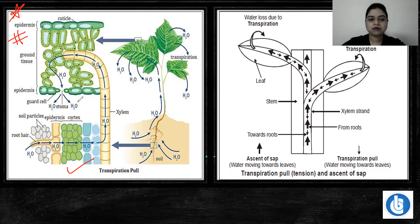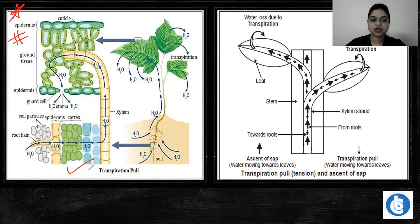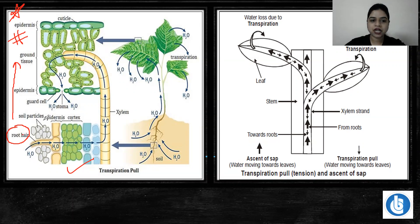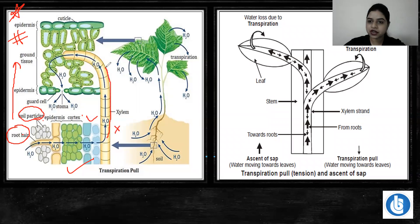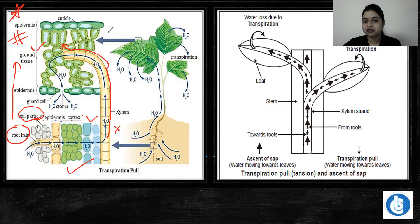Very good. You will see here that the transpiration pull is activated. Starting from the epidermis, cuticle, and ground tissue — start with root hair. There is capillary water in soil particles. It is given to the epidermis and cortex of the root, then it reaches the xylem. In xylem, you will see the continuous water column generated because of cohesion and adhesion. With the help of transpiration pull, it goes up to the leaf, where water goes out through the process of transpiration.